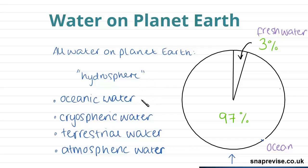And the hydrosphere can be divided up into four different groups, which we're going to look at in more detail. The first being oceanic water, then cryospheric, terrestrial and atmospheric water. And as I said, we're going to go into detail on each of these different stores of water on Earth. And these all make up the hydrosphere.